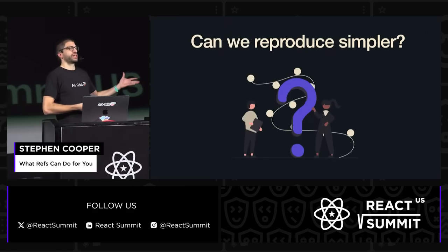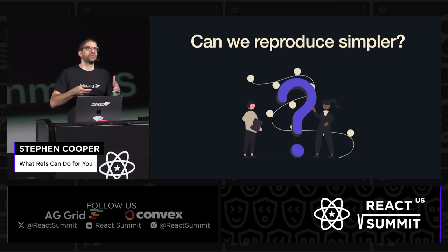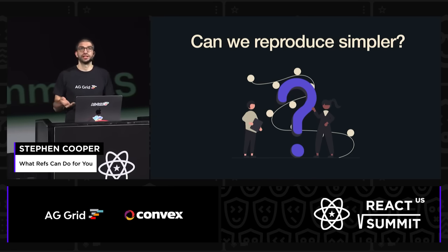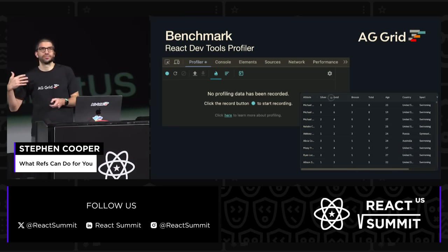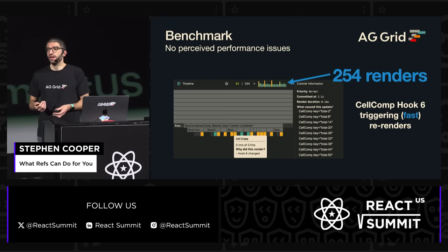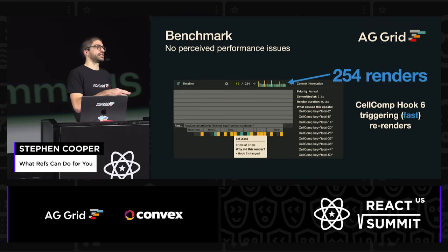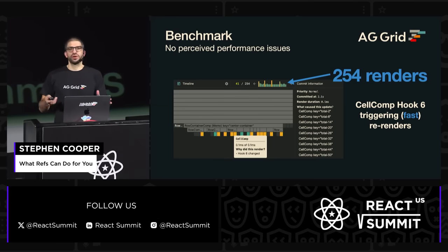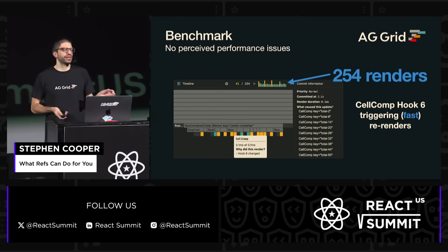Before we jump into the complicated case of this situation, let's take a step back and see: can we actually reproduce this in a simpler case and see if there's any performance issues there? So we opened up React DevTools, took away all the custom cell renderers — here we're just rendering plain text cells — moved the column around and recorded the profile. We're not seeing any perceived performance issues in this situation. But what you can see is that we've got 254 renders for just doing a few of these resizes. They're fast renders, so we haven't automatically got a problem here because we've got a lot of renders, but it's something we maybe need to consider.